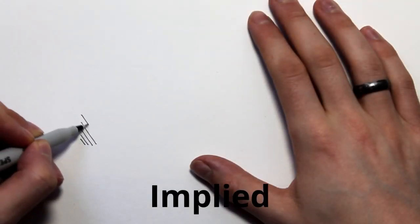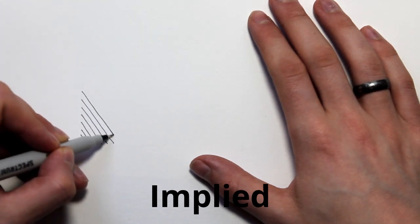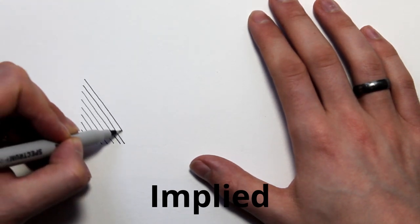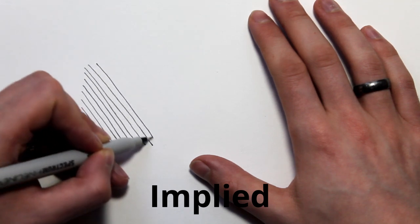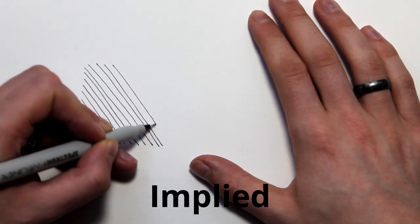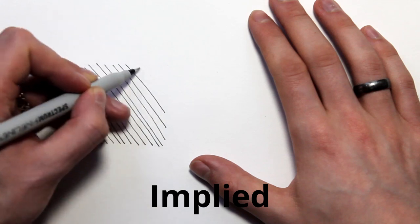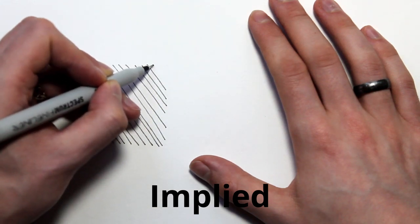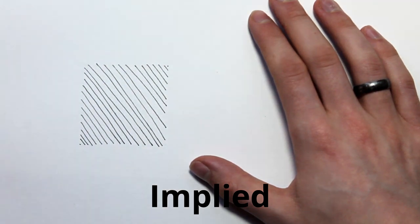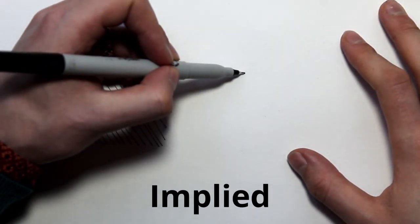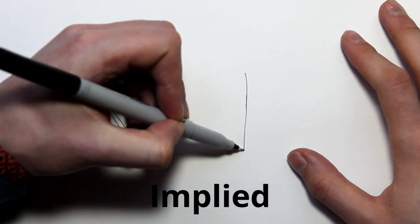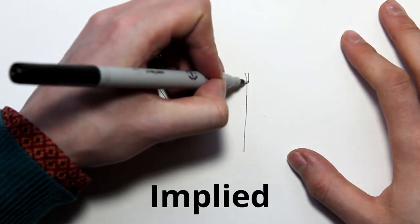Implied shapes are quite an interesting group. Implied shapes are shapes that are made up by other things. Shapes in art do not actually have to always be a closed space. So for example, this square is made up with lots of diagonal lines.